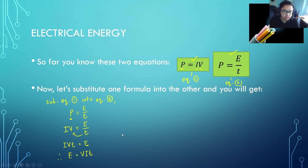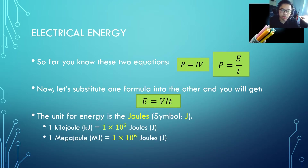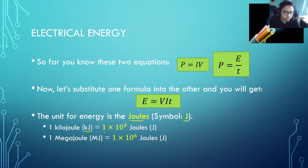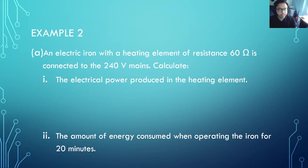Just like in the previous topic, the unit for energy is the joule, symbol capital J. Energy can also be expressed in kilojoules, where 1 kilojoule equals 1000 joules, or in megajoules, where 1 megajoule equals 1 million joules.